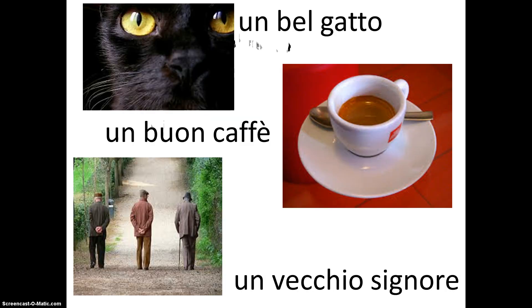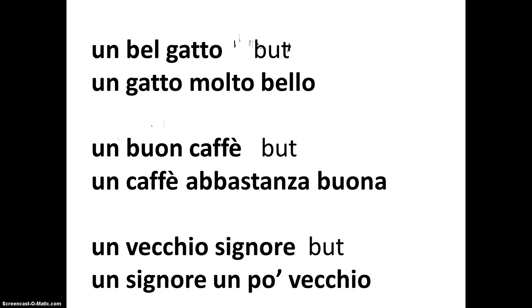Here we have some examples of bello, buono, and vecchio preceding the noun: un bel gatto, un buon caffè, un vecchio signore. Notice the placement of the adjective is the exception — instead of coming after the noun, in these special cases it comes before. However, when you add modifiers like molto, abbastanza, or un po', the adjective moves back to the end: un gatto molto bello, un caffè abbastanza buono, un signore un po' vecchio.